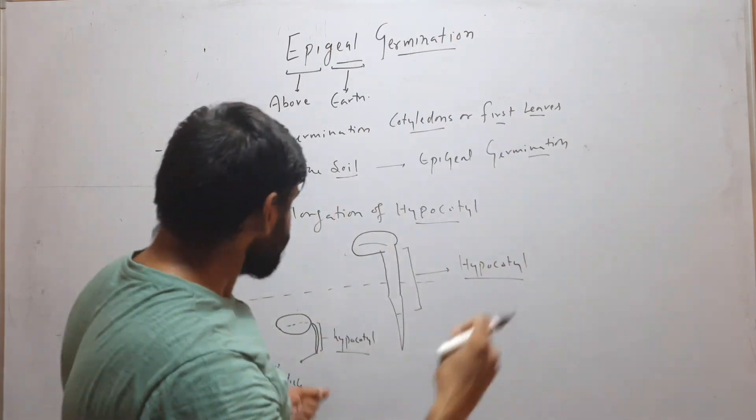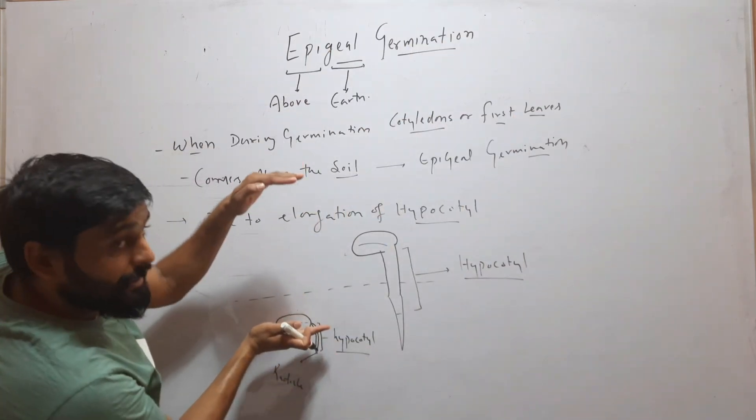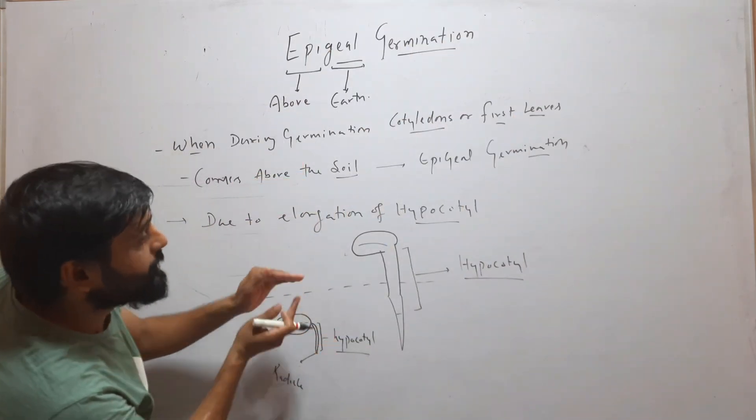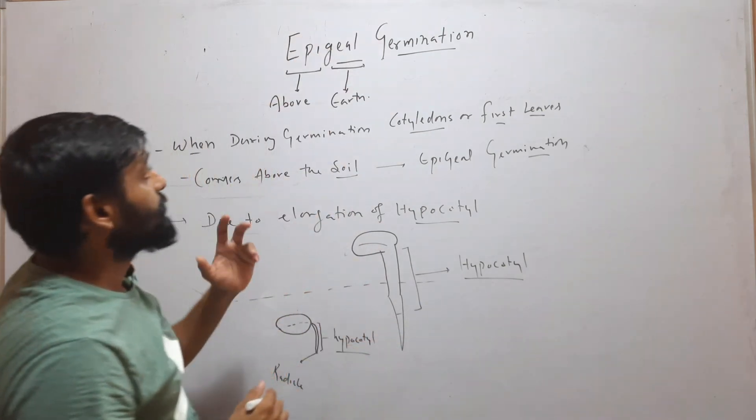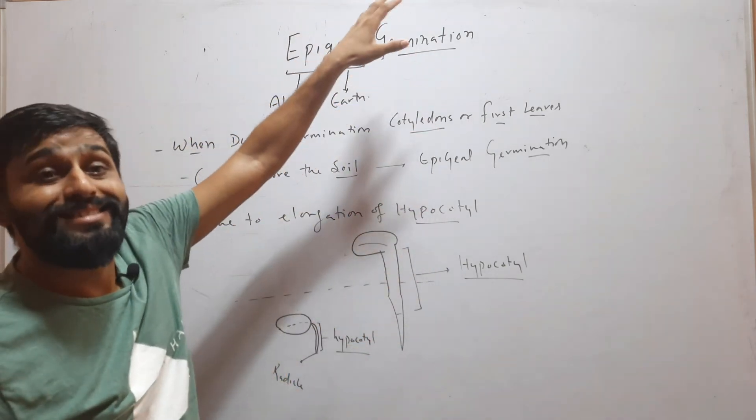Due to its elongation, it will take the cotyledons above the soil. This type of germination is called epigeal germination.